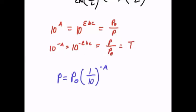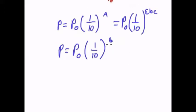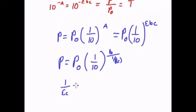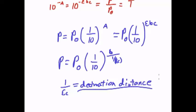The ten to the negative a is the same as one tenth to the positive a, and that a is in turn p sub nought times one tenth to the power of positive epsilon beta c. This is going to be b divided by one over epsilon c, and this one over epsilon c is going to be equal to our decimation distance.